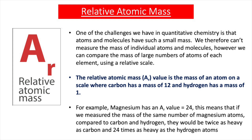When studying quantitative chemistry at GCSE, it's important that you understand the meaning of the term relative atomic mass. One of the challenges we have in quantitative chemistry is that atoms and molecules have such a small mass — we therefore can't measure the mass of individual atoms and molecules. However, we can compare the mass of large numbers of atoms of each element using a relative scale. The relative atomic mass is the mass of an atom on a scale where carbon has a mass of 12 and hydrogen has a mass of 1. We give it the symbol AR, where R stands for relative and A stands for atomic mass.